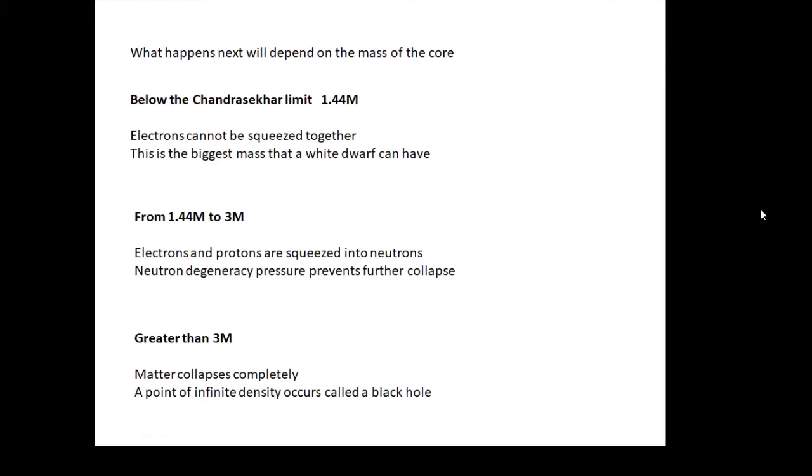This becomes a neutron star. If the mass of the core is greater than 3M, then there's enough gravity to just squish everything together. Matter collapses completely. The gravity can't be stopped and everything is squished together into a point of infinite density. It's a singularity, a point singularity called a black hole. Matter collapses completely into a singularity.